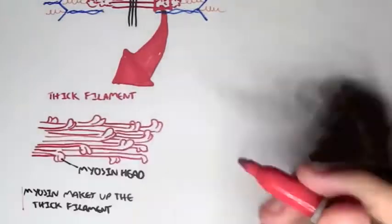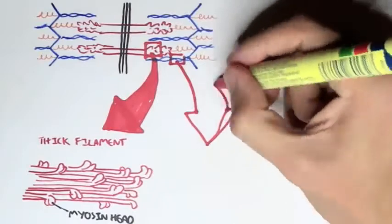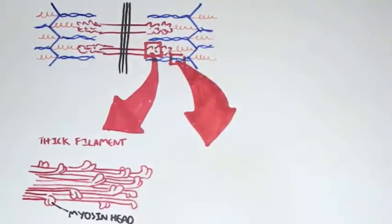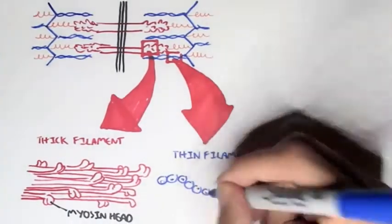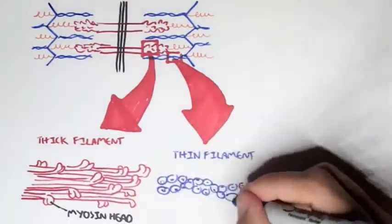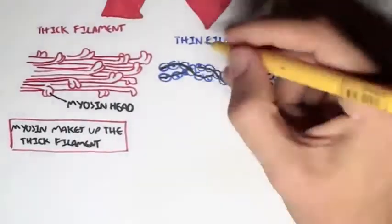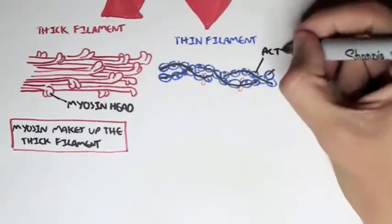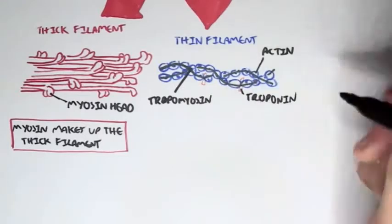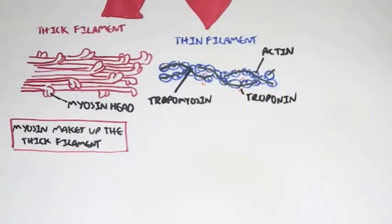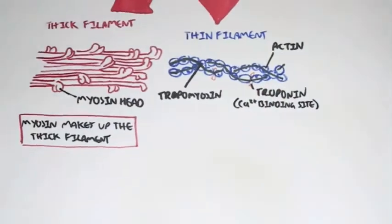Each of these heads are part of a myosin molecule. And if we take a portion of the thin filaments, this is what the thin filament looks like. It's a bit more complicated, in that the actin proteins are twisted together like a helix. There are also other structures, such as tropomyosin, which actually blocks the binding site of actin here, shown in green. We also have troponin here in orange, which allows calcium to bind to it.